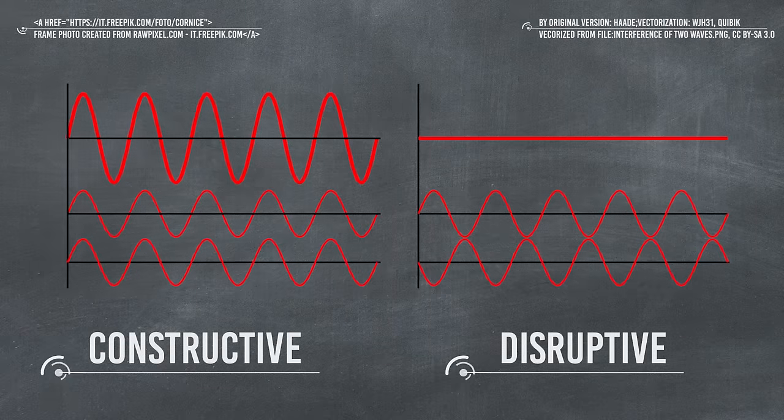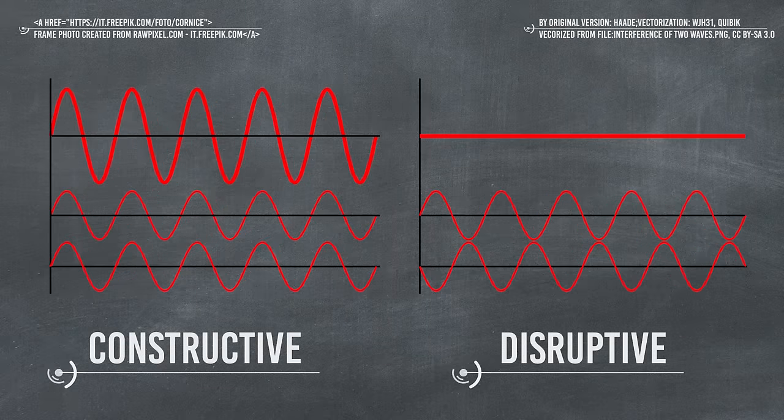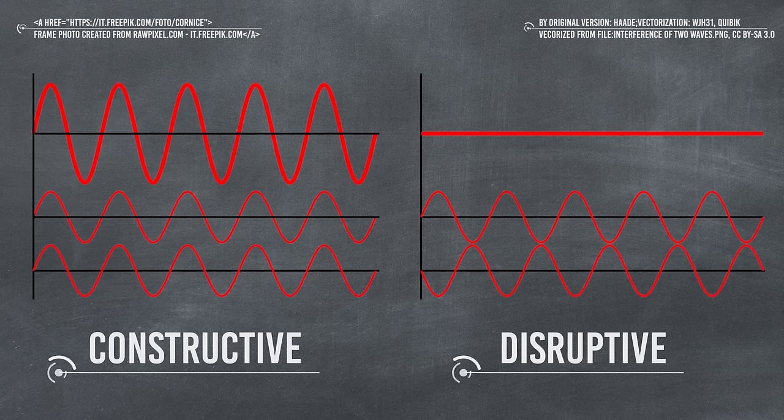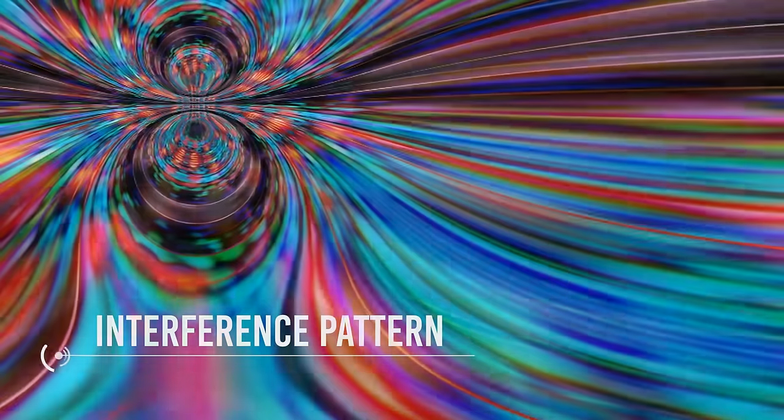The interference could be disruptive or constructive, and in the first case they will cancel each other out. In the second case, they will reinforce each other, giving spots with the brightest lights. So when the light meets a second wall placed behind the first, you will see a stripy pattern, called an interference pattern.